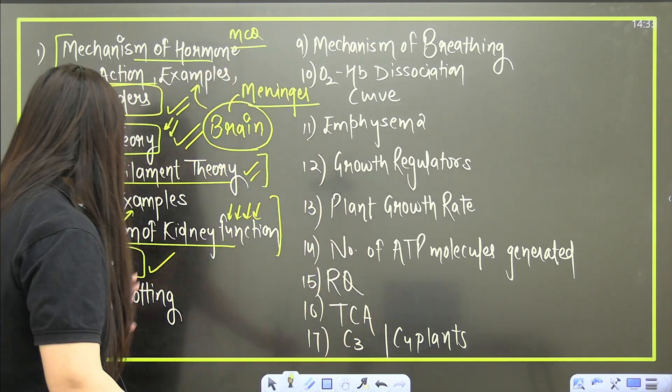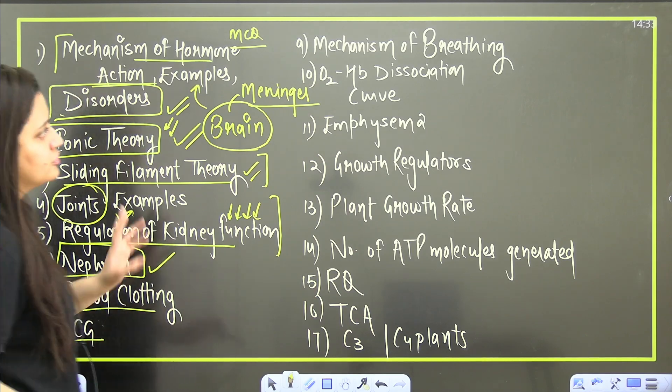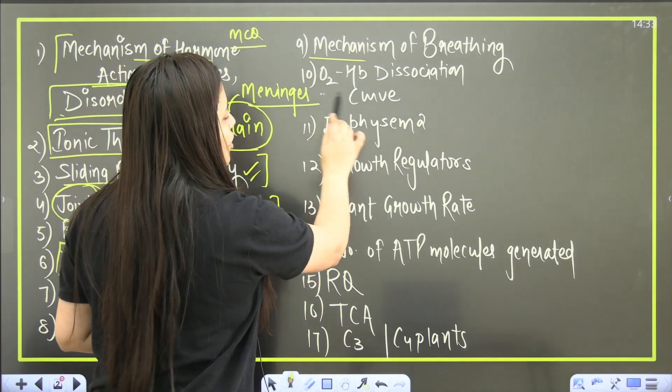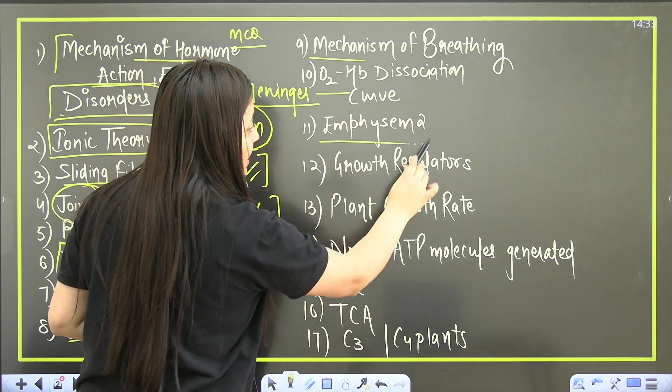Blood clotting, ECG for sure, mechanism of breathing, oxygen hemoglobin dissociation curve, emphysema - I marked it separately because you have to cover it with the biotech part as well.